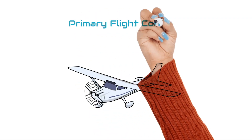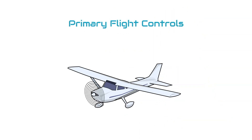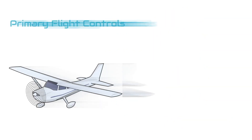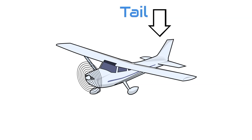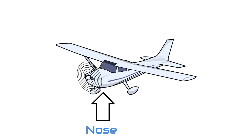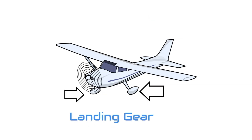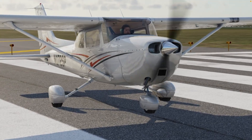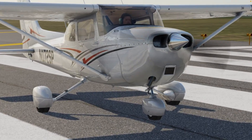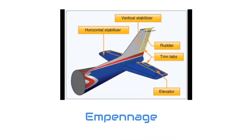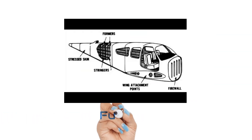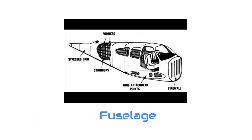Let's talk about the primary flight controls. The different parts of the aircraft are known as the wings, the tail section, the nose section, and the landing gear. The tail section is often referred to as the empennage, and from the tail forward, that's known as the fuselage.